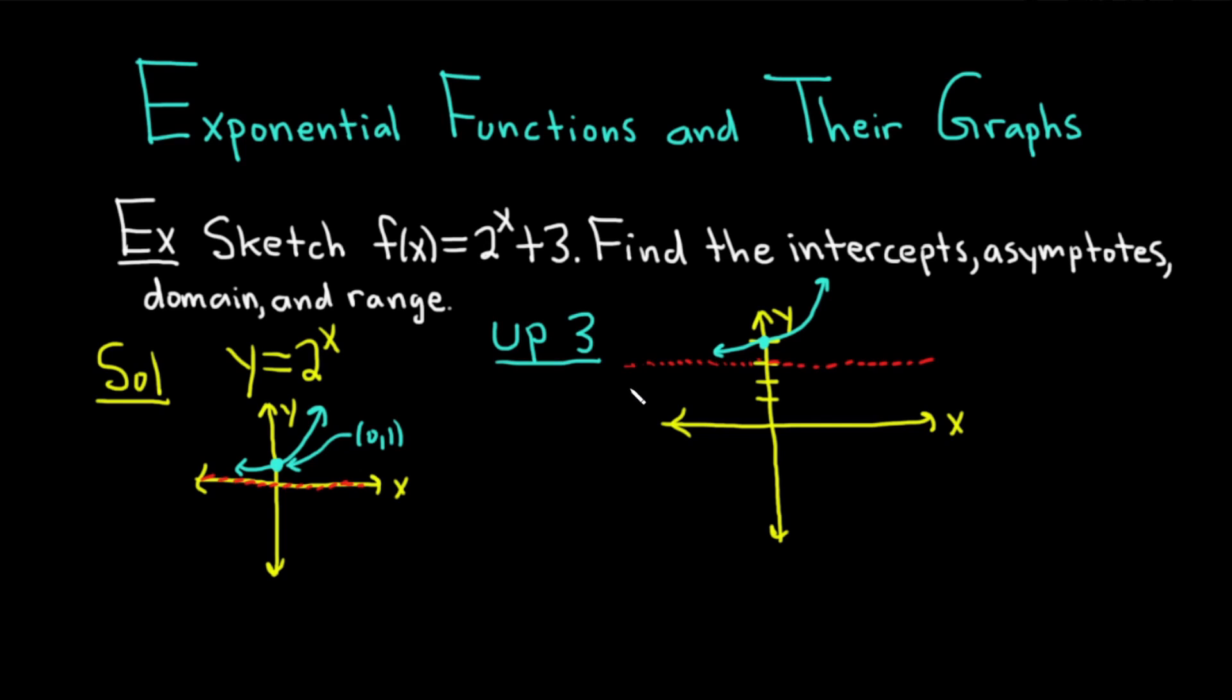As far as the intercept, we can write it down now. So the y-intercept, you can get it from the graph. It would be 0, 4. When x is 0, y is 4. If you wanted to get it from your function, you could do that as well. Let me just show you. You could plug in 0.